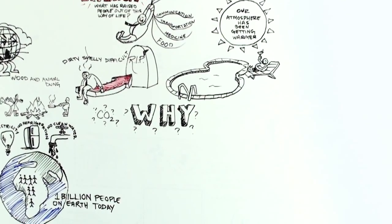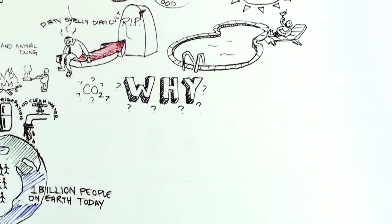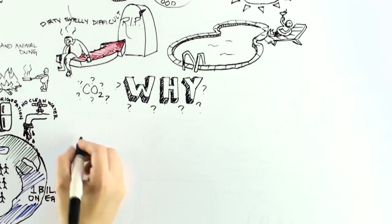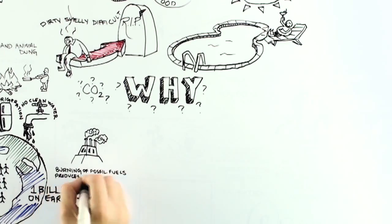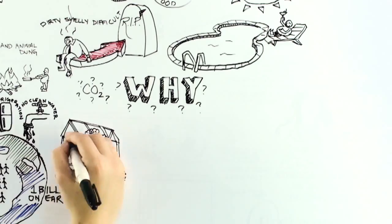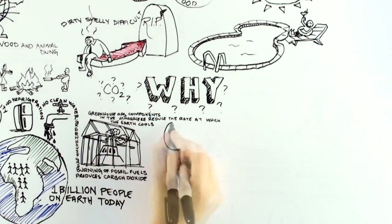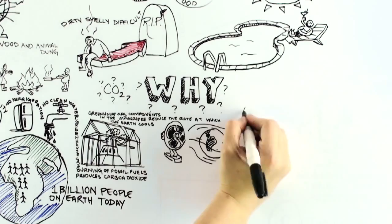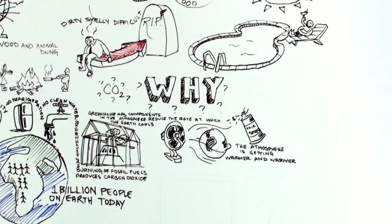Many scientists claim that the warming is the result of our use of fossil fuels. In the case of climate change hysteria, the argument goes something like this: Burning of fossil fuels produces carbon dioxide, a greenhouse gas. Greenhouse components in the atmosphere reduce the rate at which the Earth cools to outer space through infrared radiation. We've been releasing more and more carbon dioxide, and the atmosphere has been getting warmer and warmer. The answer must be that the two events are related.